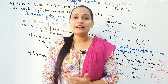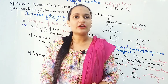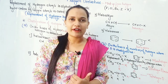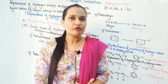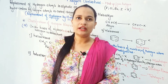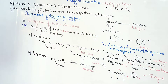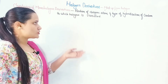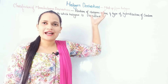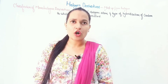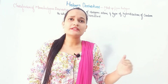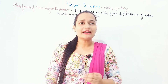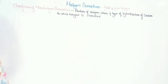The next topic in our book is classification of monohalogen derivatives — how do we classify monohalogen derivatives? This classification is based on the position of the halogen atom and to which hybridized carbon it is attached. Based on that, I will first classify them as primary alkyl halide, secondary alkyl halide, and tertiary alkyl halide.